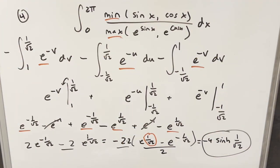So the final answer is minus four times sinh of one over square root of two. That's it — a pretty good problem from the Berkeley Integration Bee 2020. Thanks everyone for watching, have a great day.